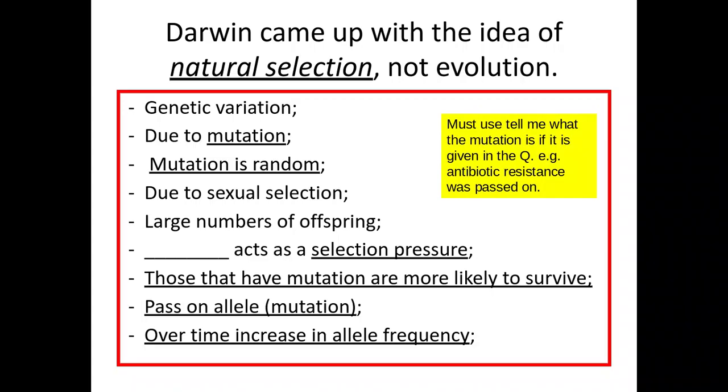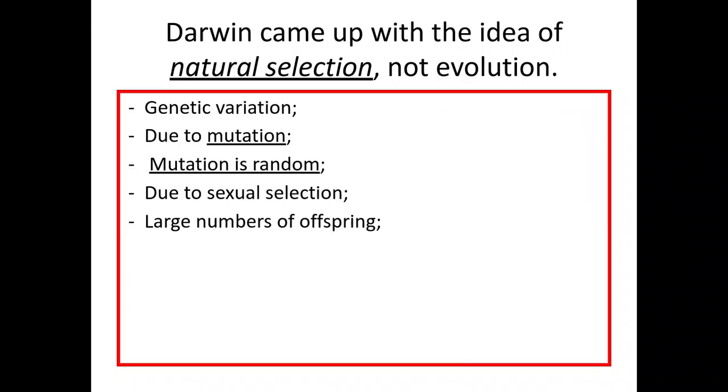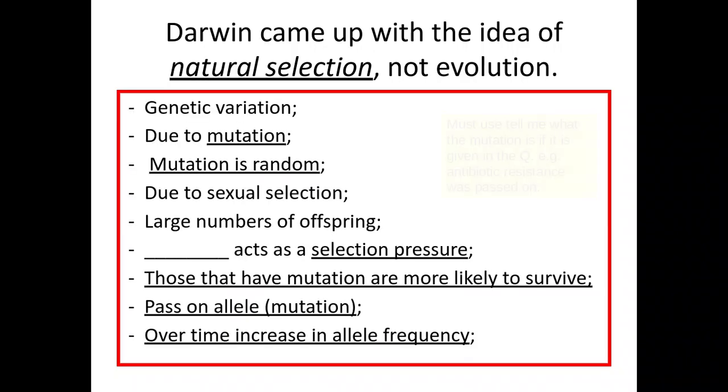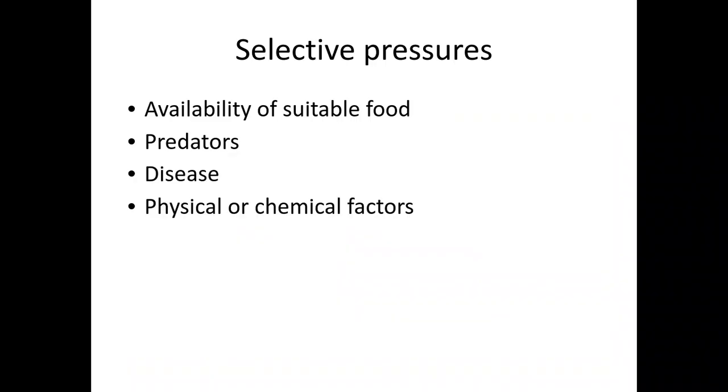It's really important that we say what the mutation is and what the selection pressure is from the exam question. So here we go, we'll look at an example. Different selection pressures could be suitability for food, predators, diseases, and chemical or physical factors.